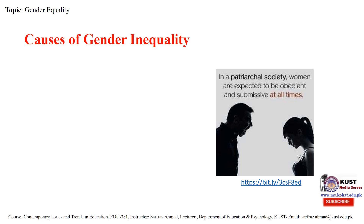Despite this progress, many challenges remain. Discriminatory laws and social norms remain pervasive. Women continue to be underrepresented at all levels of political leadership. One in five women and girls between the ages of 15 and 49 reports experiencing physical or sexual violence by an intimate partner within a 12-month period. Women also play a disproportionate role in responding to crises, including as frontline healthcare workers and unpaid caregivers at home.